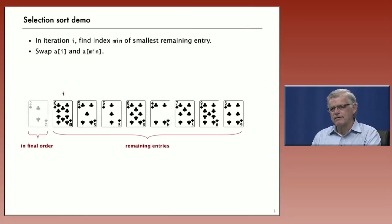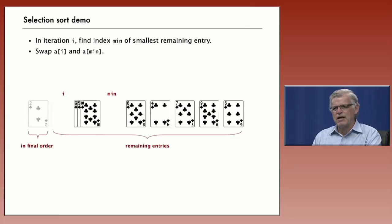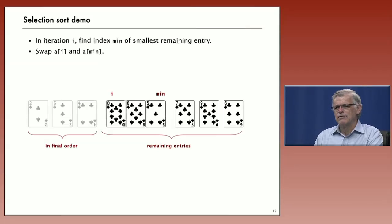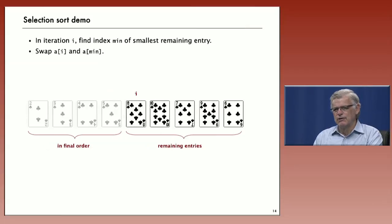Now that part of the array to the left of i is in its final order and we simply continue. So now the smallest is the three, swap that with i, increment i. Now we have the two and three in order and continue in that way. Find the smallest, the four, swap that one with i, increment i. Find the smallest, it's five. Swap that with i, increment i. Find the smallest, swap that with i, increment i.